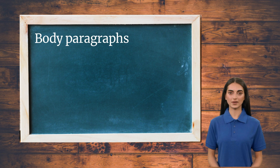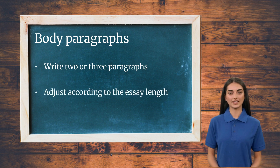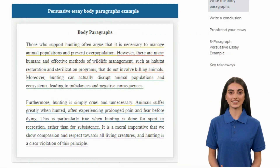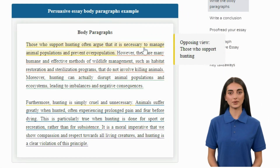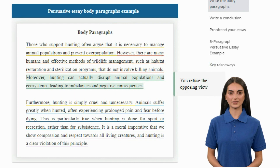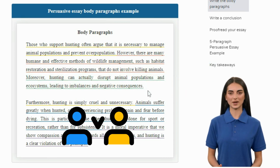Time to build up your essay's backbone — the body paragraphs. This part is usually about two or three paragraphs, but feel free to change that depending on your essay's length. Don't forget to include the opposing view in one of your body paragraphs. In the example, the writer starts the topic sentence by mentioning the opposing view, because the following sentences will include counterarguments. Then we see the writer's counterargument, trying to convince the reader with their opinion. In the last sentence, the writer directly addresses the opposing view and refutes it by stating a fact or negative effect. Remember to address the opposing opinion to make your essay more credible and convincing.